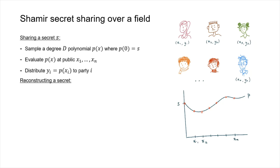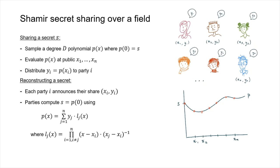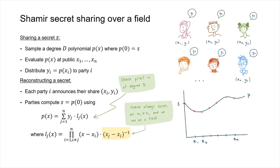To reconstruct the secret, parties announce their shares and then with all of the points they can do Lagrange interpolation to get the polynomial that goes through these points. Parties just need to check that the polynomial they reconstruct is of the correct degree. The only real thing that might cause issues is computing the inverse of the difference between every x_j and x_i, but since we're working over a field, this inverse is always going to exist, so this all works out.